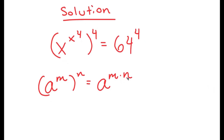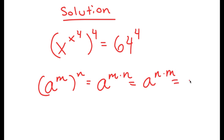However, m and n are interchangeable, meaning this can also be written as a to the power of n times m. Now, if a to the power of m times n is equal to a to the power of m to the power of n, then a to the power of n times m should be equal to a to the power of n to the power of m.